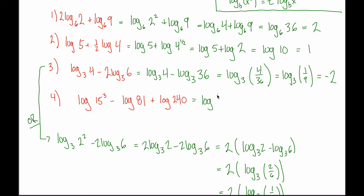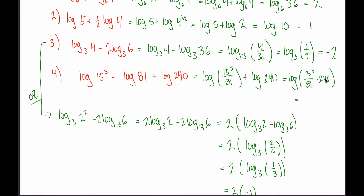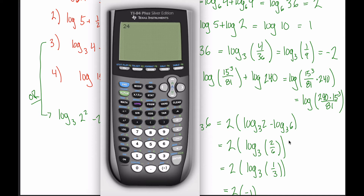The second log rule lets us rewrite the first two terms as log of 15 cubed divided by 81, plus log of 240. Now that we have the sum of two logs, we apply the first log rule and rewrite this as the log of 15 cubed divided by 81 times 240. Thinking of 240 as a fraction over 1, this becomes log of 240 times 15 cubed divided by 81. Putting that into a calculator, we get exactly 10,000.